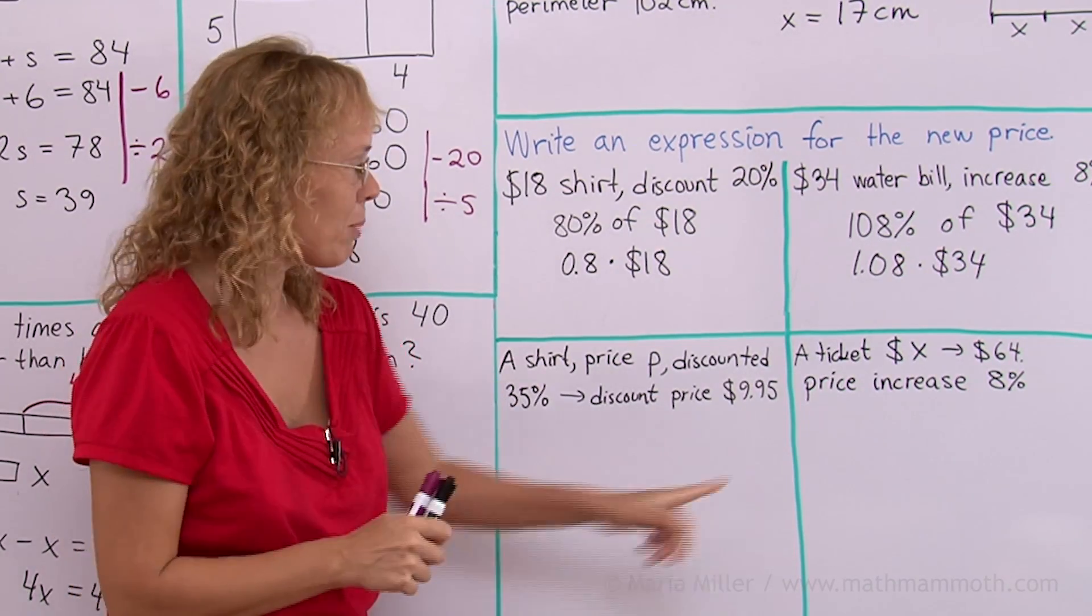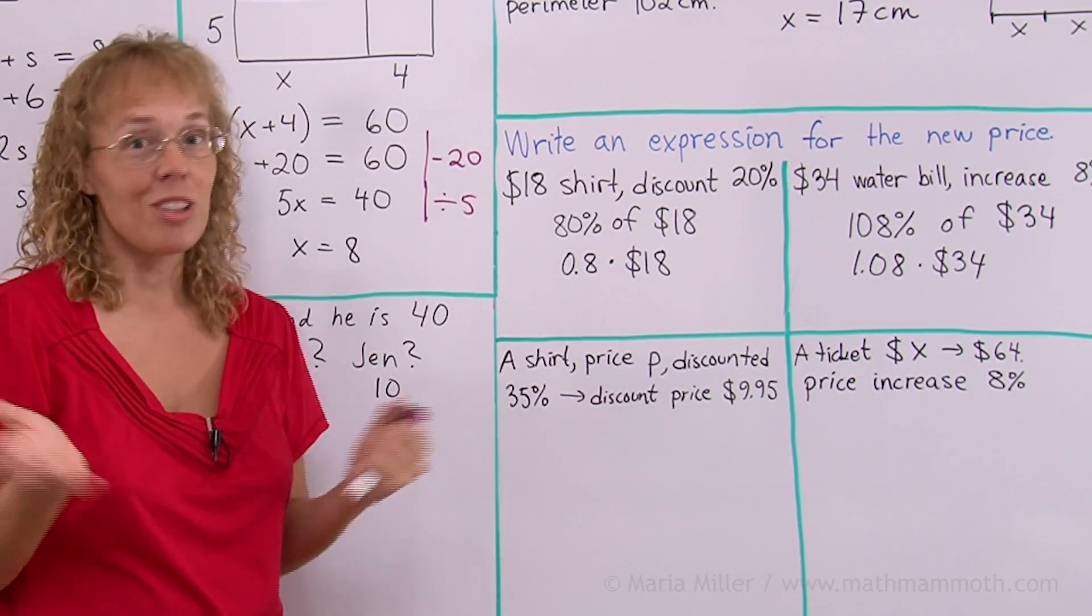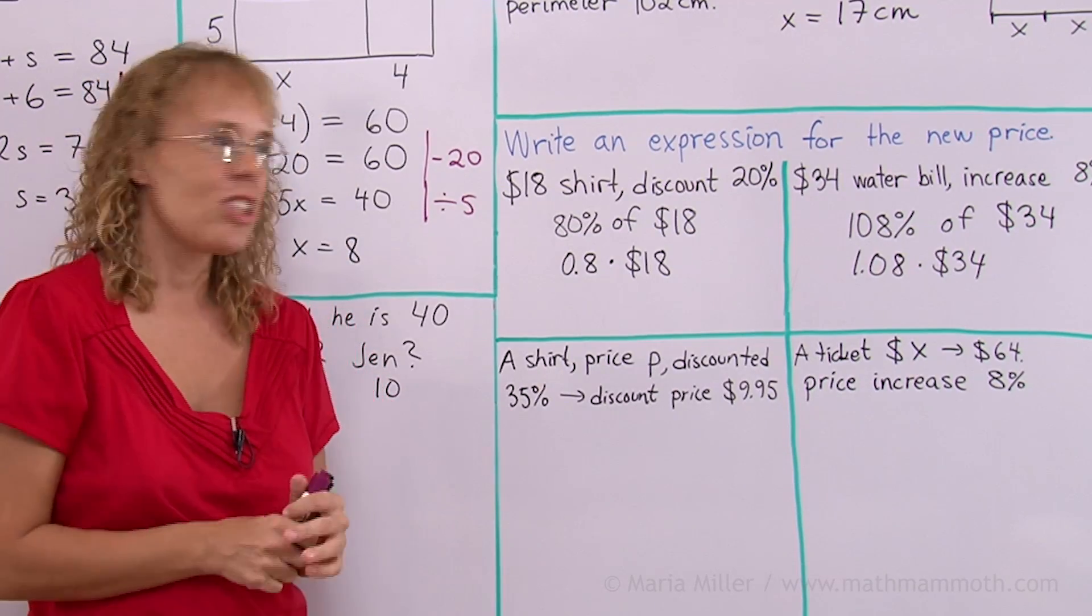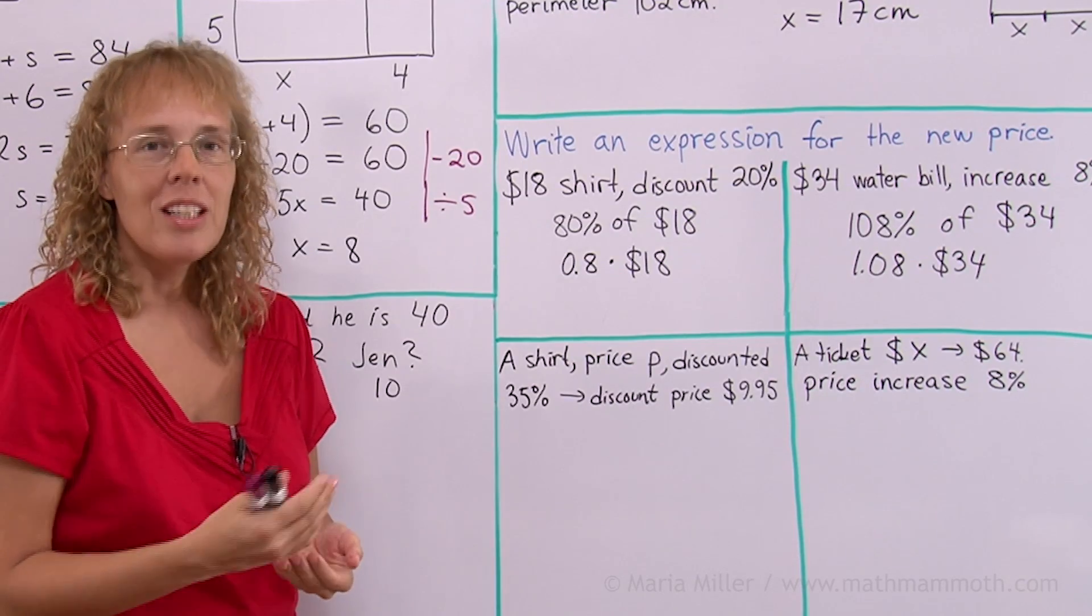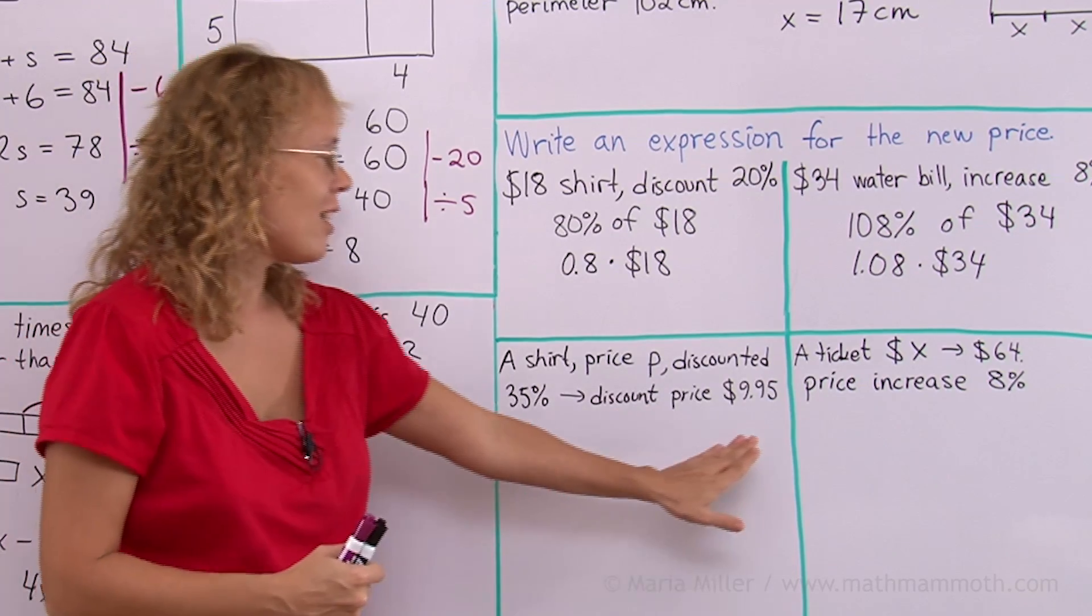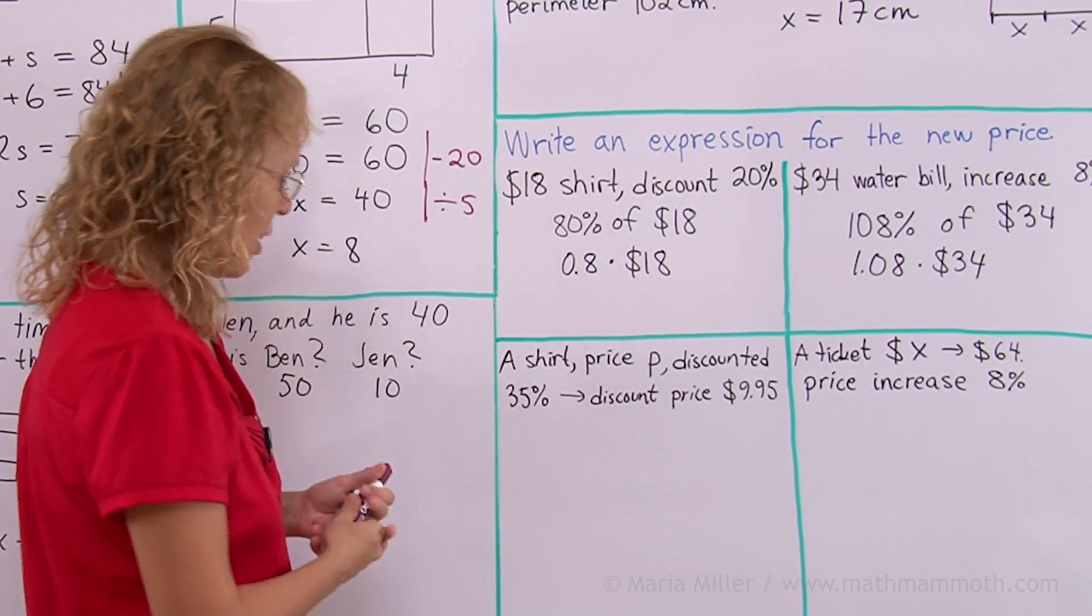You have these shirts to sell and you want to discount them by 35% and you want to advertise the discounted price as being $9.95. So first you need to decide your original price. Since you are the store owner, you can decide any price for your shirt originally. So you want to decide what is my original price so that when I have this big sale, I make everything to be 35% off, then I will advertise this price as the discounted price.